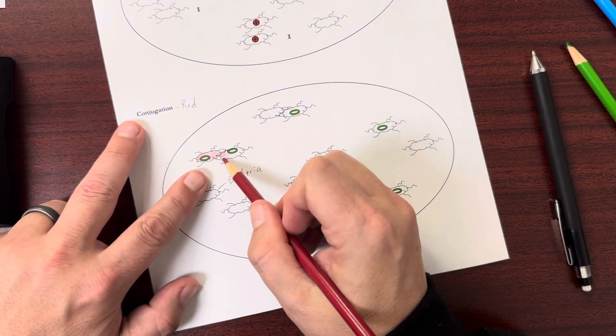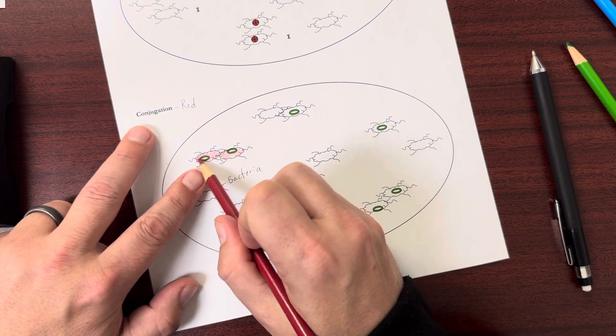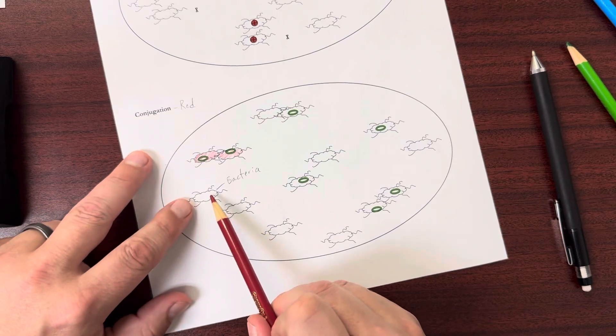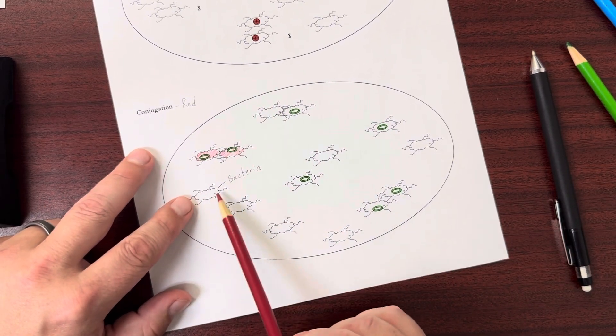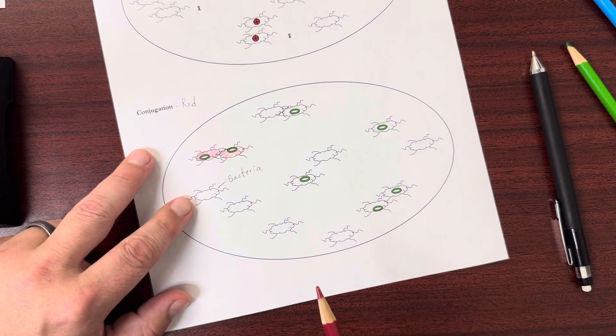I also know this one went through conjugation because it has that same green, circular DNA. What about this one? Well, this one doesn't have it. So it did not go through conjugation. So I'm not going to color it in red. I will find the other ones that have these to color in red.